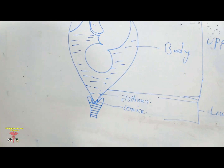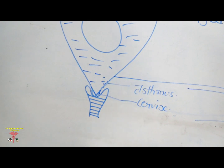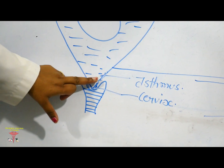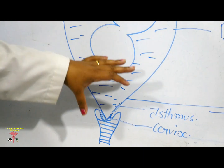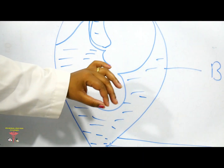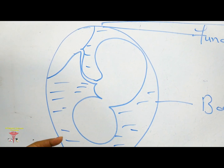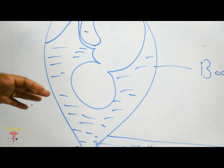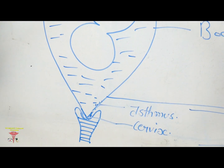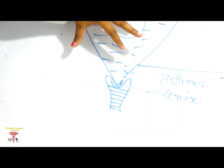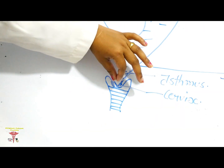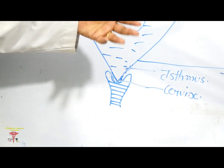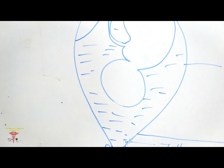During the process of uterine contractions and retractions, the lower uterine segment is pulled up. With each contraction and relaxation interval, the lower uterine segment is pulled upward and the cervical canal opens up gradually, leading to cervical dilatation.